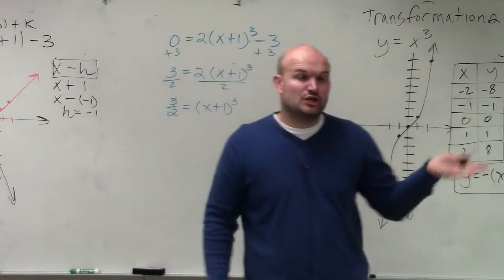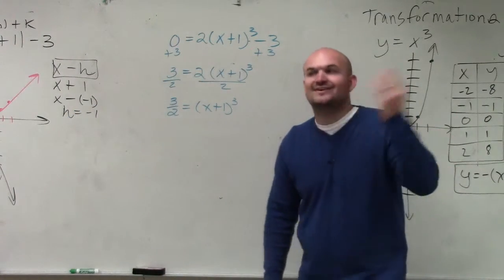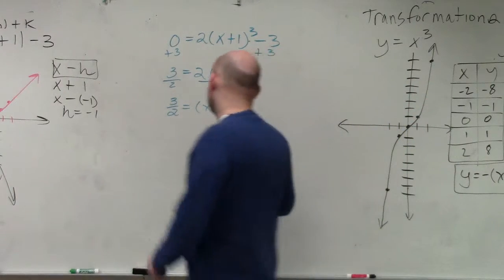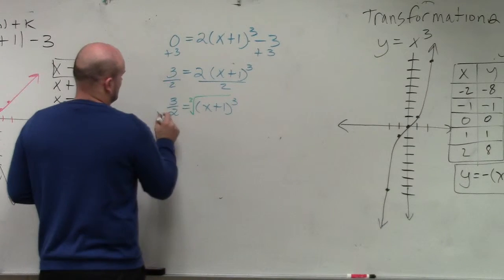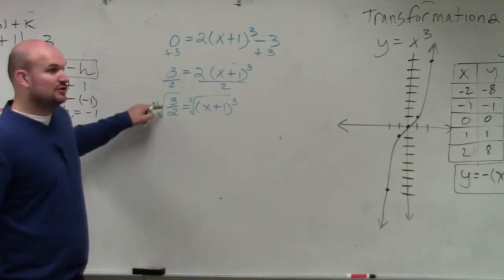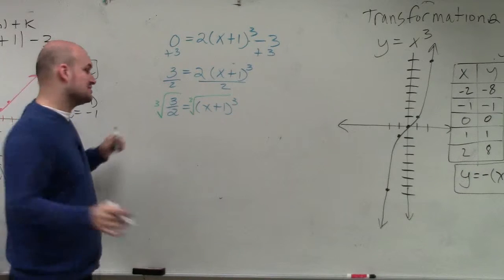Now, to get rid of that cubing, I need to take the cube root. I do not know what the cube root of 3 halves is, so I'm going to leave it just like that.